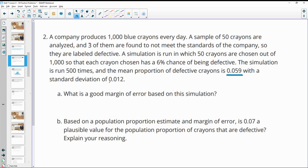So we have our mean here and we have our standard deviation here. What's a good margin of error based on this simulation? So a good margin of error is two standard deviations. So we would take 0.012 times 2, which would give us 0.024 as a good standard deviation.